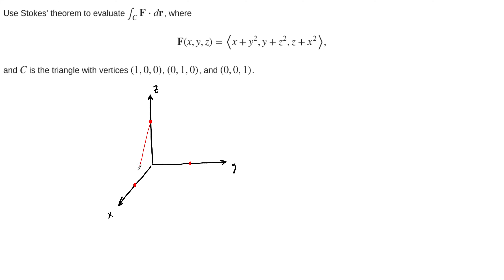If we want this to be a positively oriented curve and have the bounded region on our left-hand side as we traverse it, then it needs to go this way — it has to go like this. And so what we would like to do is evaluate this path integral, but let's do it by using Stokes' theorem.